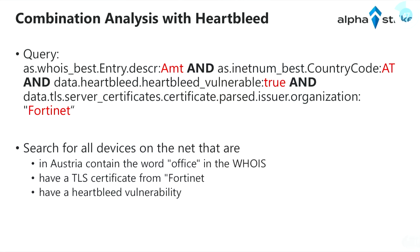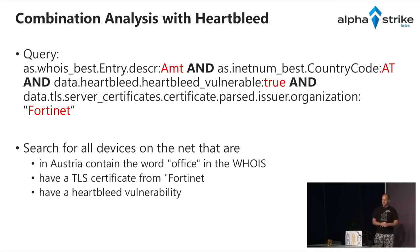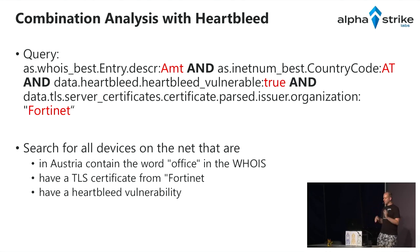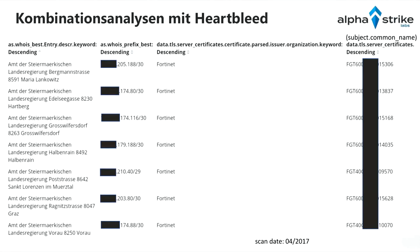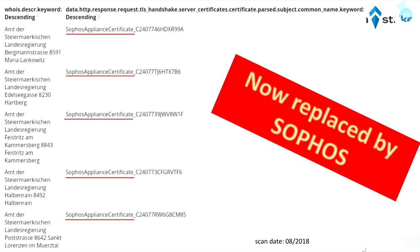Now the dark side. We can query for governance agencies in Austria that have TLS certificates from Fortinet — looking for Fortinet firewalls that are Heartbleed-vulnerable in Austrian government agencies. We found district bureaus with Fortinet certificates showing various firewall versions. That scan was from 2017. Rescanning one year later, we found they had replaced the Fortinet firewalls — showing differential analysis over time.